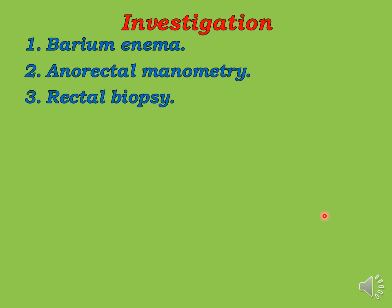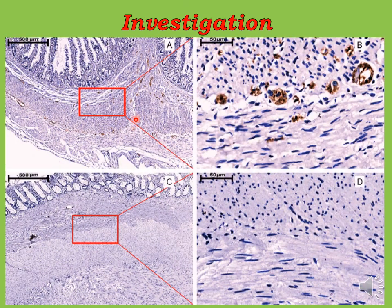The confirmative test is a rectal biopsy, because anorectal manometry is not fully diagnostic — especially in neonates, as the reflex is not fully mature. We do a rectal biopsy for histological confirmation. In normal colon there are ganglion cells, whereas in Hirschsprung disease there are absent ganglion cells. We use hematoxylin and eosin staining of both the submucosal and intermyenteric plexuses.